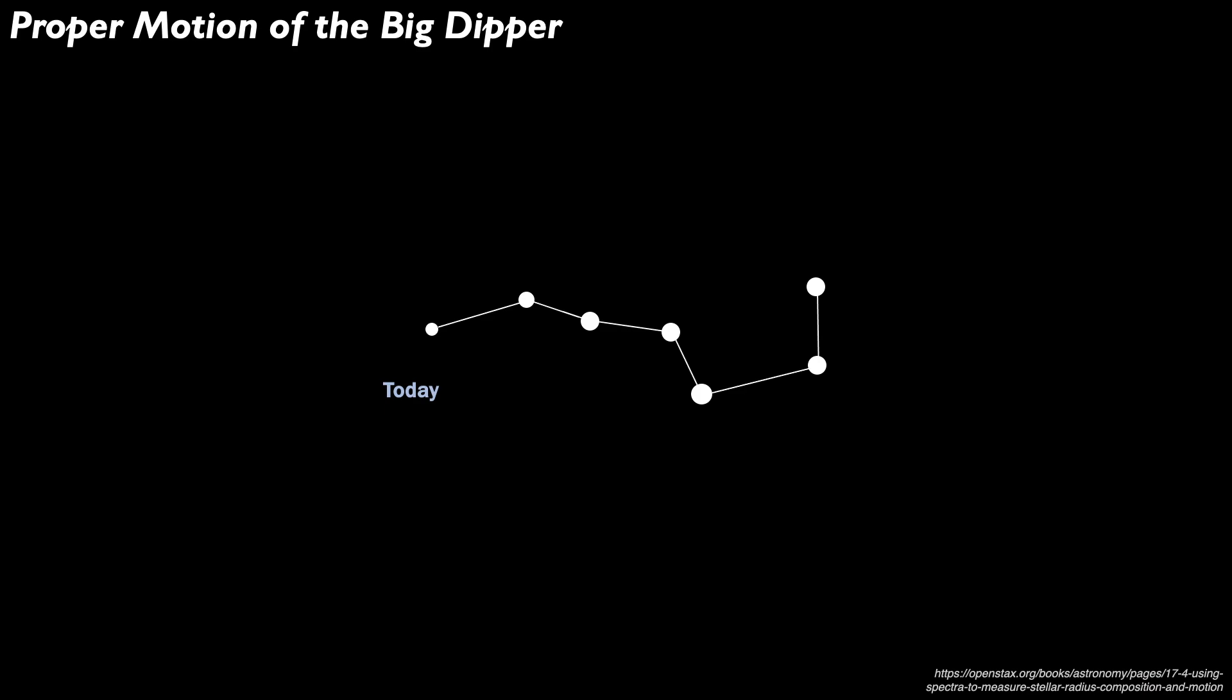With all this in mind, we can take a look at various constellations and asterisms in the sky and get a sense for how they may have changed appearance over time. Take, for example, the Big Dipper asterism in the constellation Ursa Major.